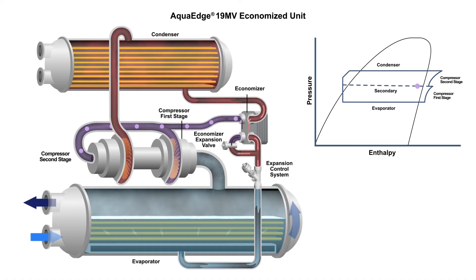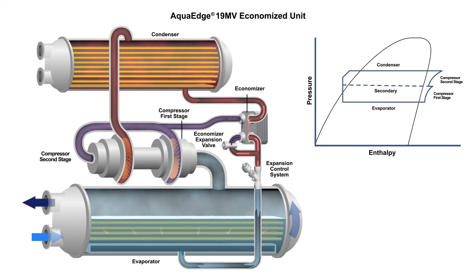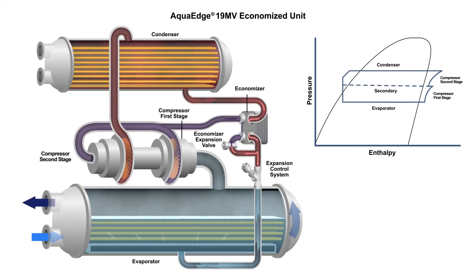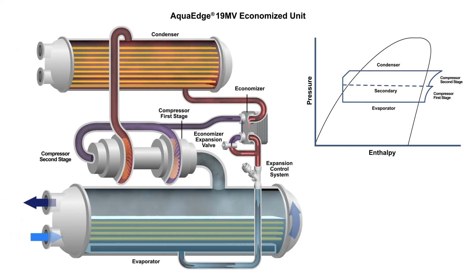The expansion control system adapts to the various conditions the chiller encounters. When low condenser water conditions exist, the 19MV will continue to run without the use of hot gas bypass. Thus, the 19MV can maintain stable and efficient operation, providing unconditional performance.